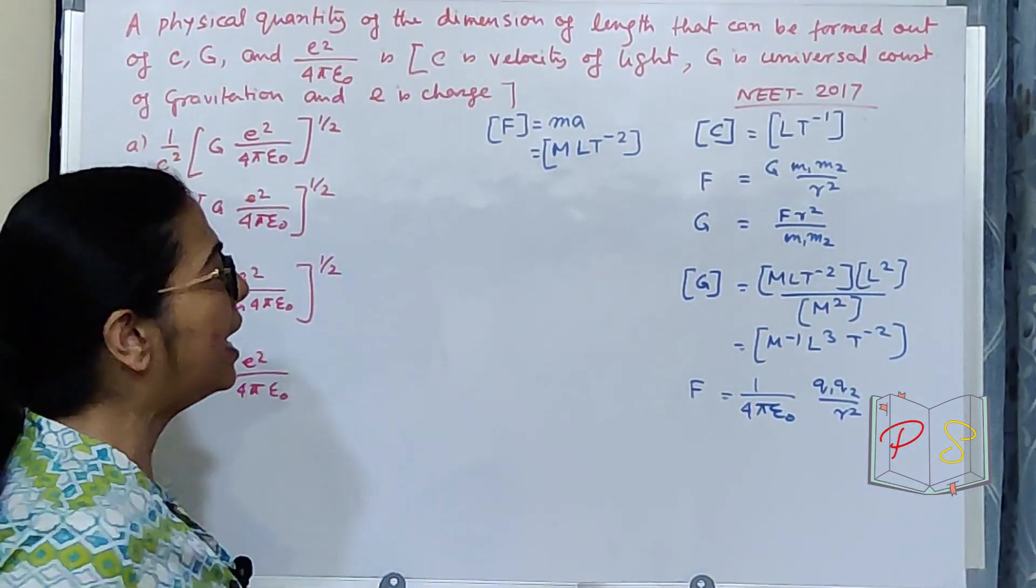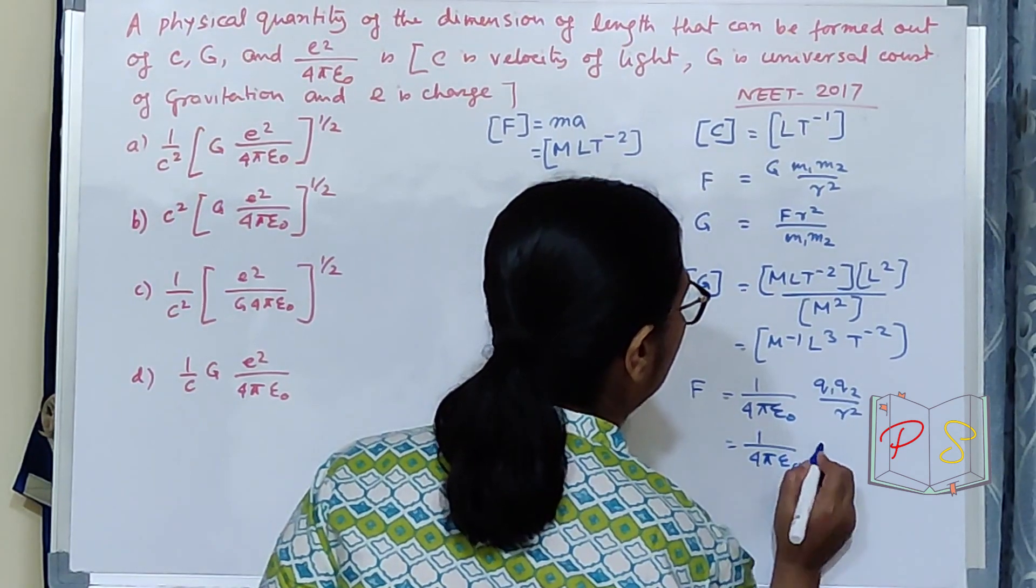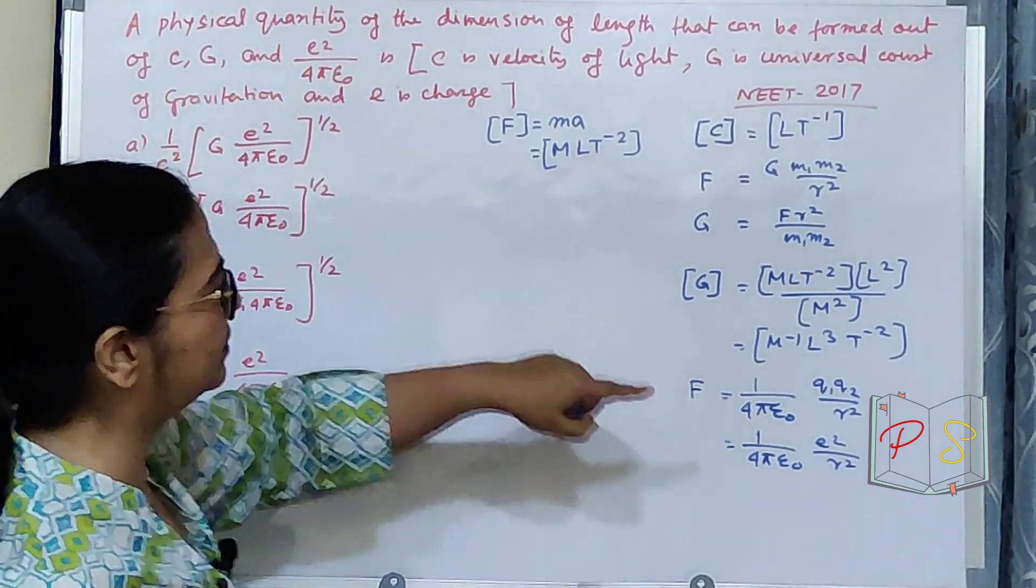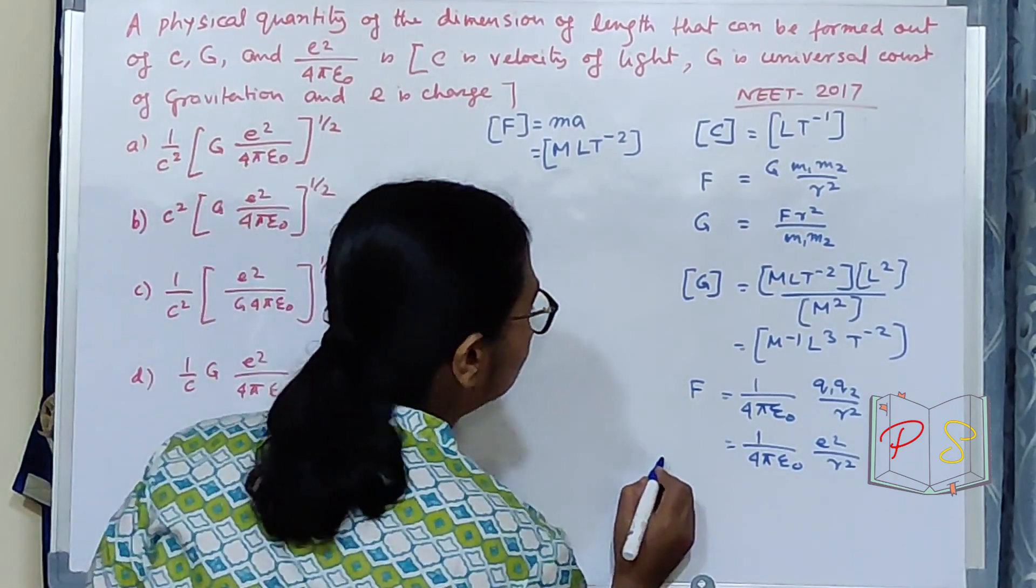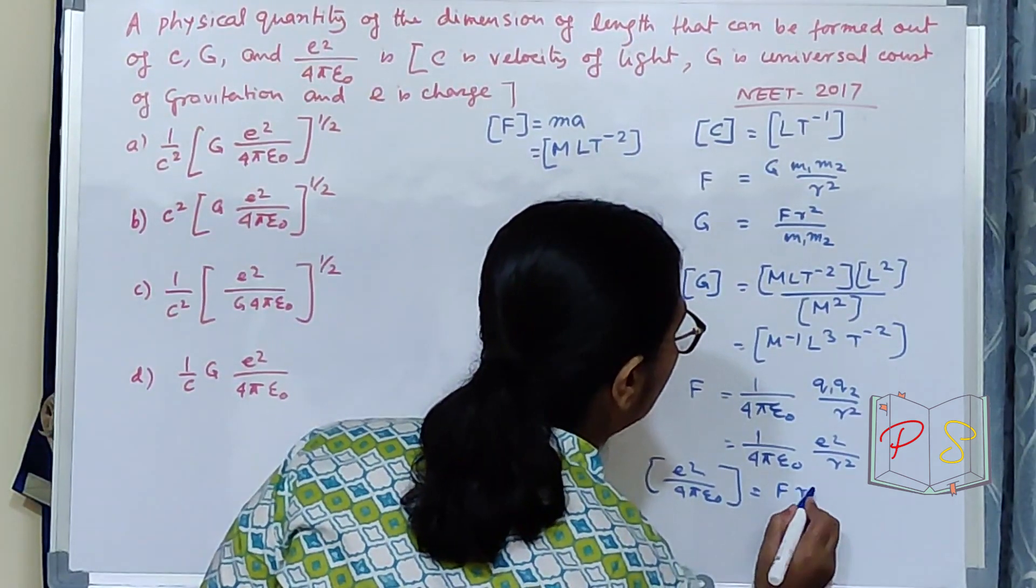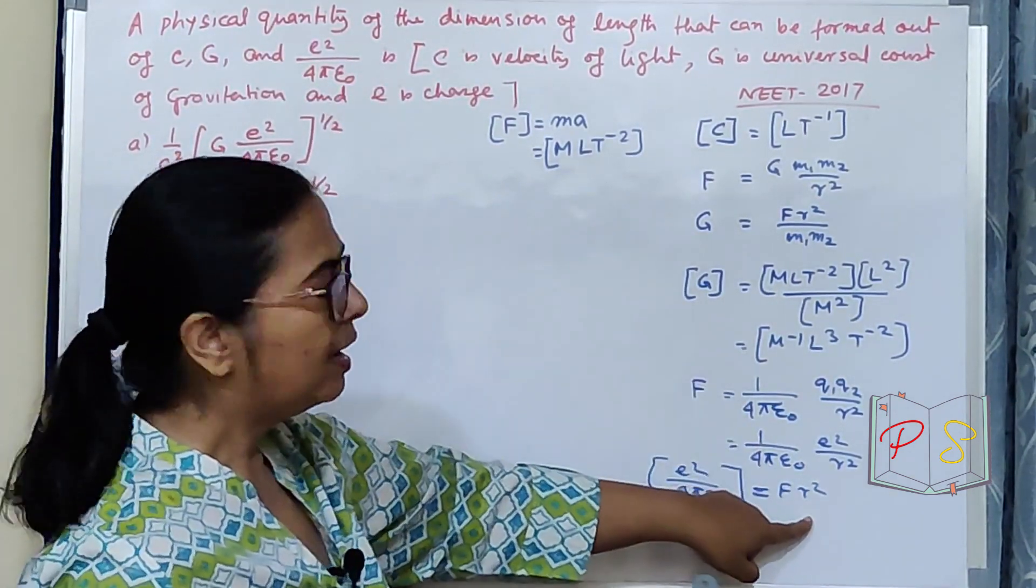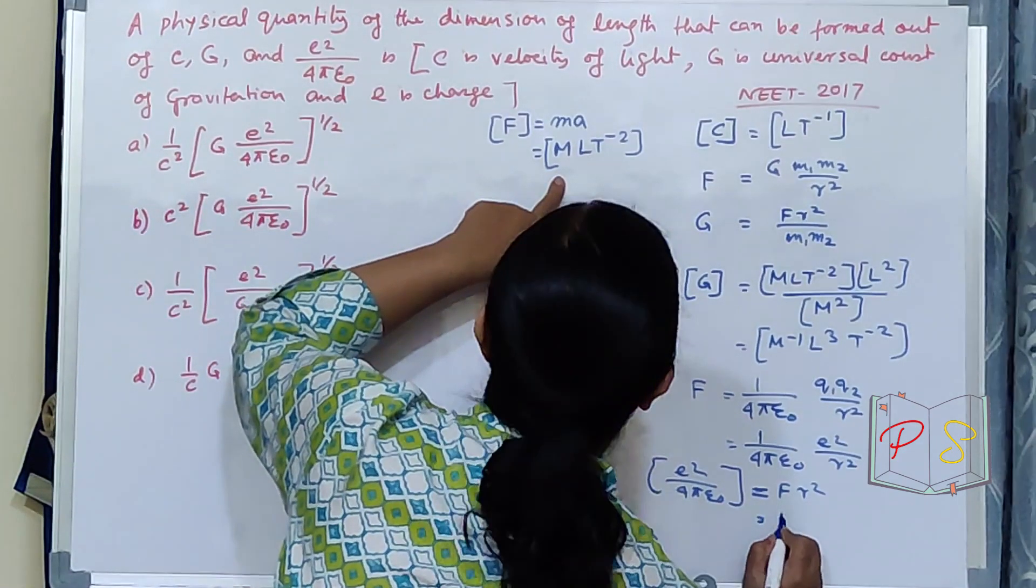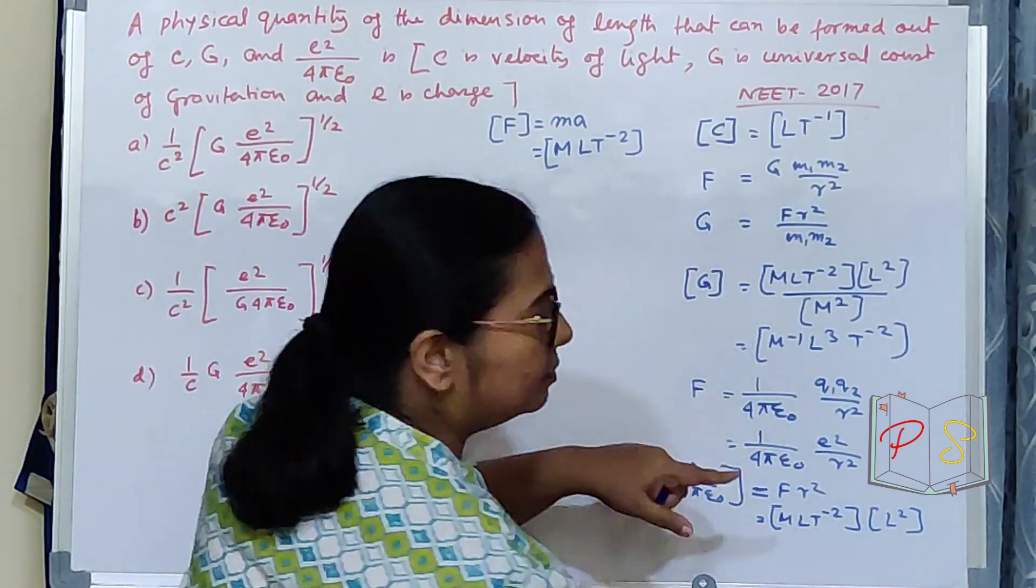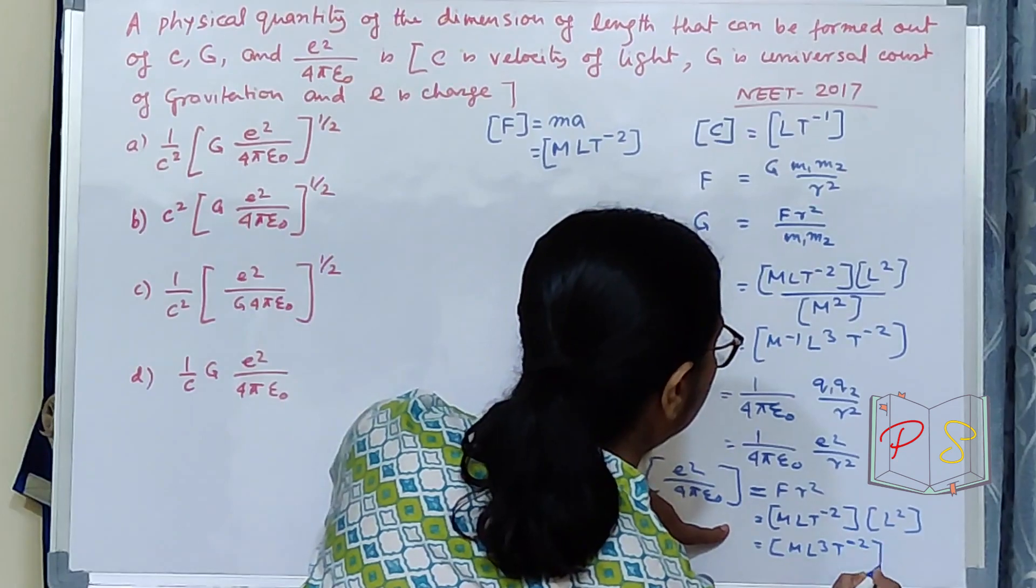Q1 and Q2 are my two charges. Over here they have given E, E is your charge. So, I can replace this as 1 upon 4 pi epsilon naught E square upon R square. You need to find out the dimension of E square upon 4 pi epsilon naught. So, dimension of E square upon 4 pi epsilon naught that will be FR square dimension of FR square. What is the dimension of F? This. So, M L T minus 2 and for R square I will have L 2. So, ultimately I will have M L cube T minus 2.